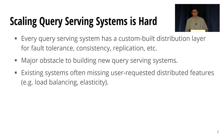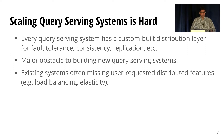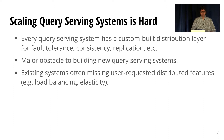One observation we had when looking at all these different query serving systems is that every one of them has a custom-built distribution layer providing key distributed systems features like fault tolerance, consistency, and replication. These distribution layers — and every system has one — are complex and hard to build, and were actually a major obstacle for building new query serving systems. Existing systems are often missing key user-requested distributed features like load balancing and elasticity, because their developers had to prioritize other aspects of their system.